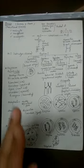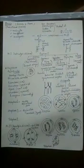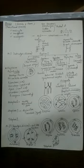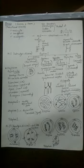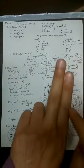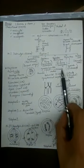After leptotene and zygotene, the next sub-stage is pachytene. 'Pachy' means thick — like 'pachyderm' (elephant), where 'derm' means skin. In pachytene, chromosomes become quite thick. The main event of pachytene is crossing over. Each chromosome consists of two sister chromatids; when homologous chromosomes come close, they exchange portions through crossing over — which never occurs between sister chromatids but always between non-sister chromatids, exchanging genetic material.